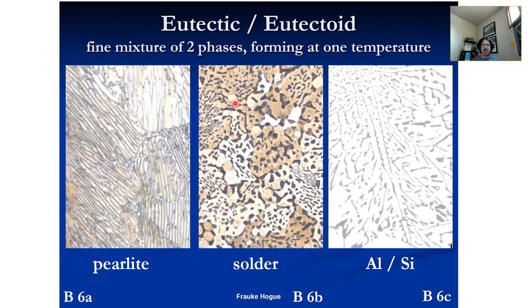Eutectic/eutectoid — it's a mixture of two phases forming at one temperature, ideally the eutectic point; when solidified, it becomes a eutectoid. Pearlite is one example; solder (perhaps lead-tin) is another; and aluminum-silicon. We have two phases: eutectic and eutectoid. With metallography you can see chemically defined phases. For pearlite: ferrite is the white lamellar phase (pure iron), cementite is the black phase (Fe₃C) — they're chemically different from one another.